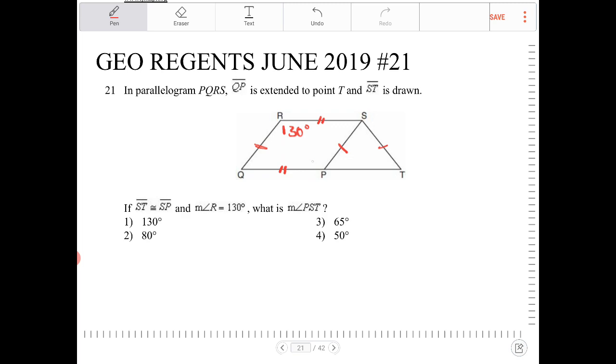The opposite angles are also congruent. So if angle R is 130, then angle QPS is also 130.